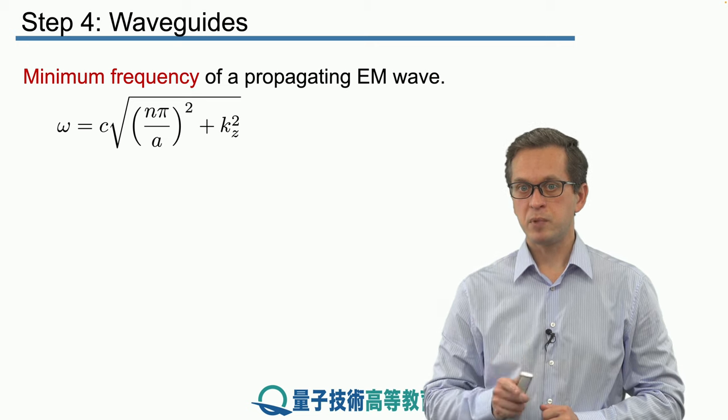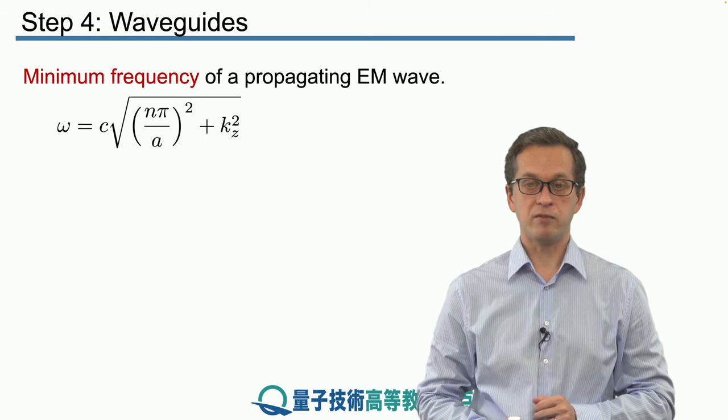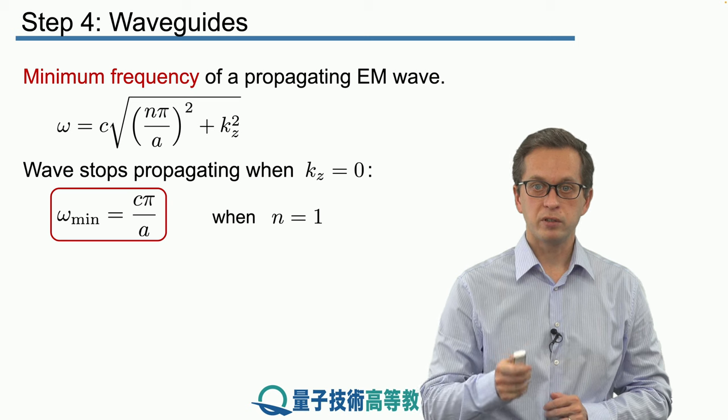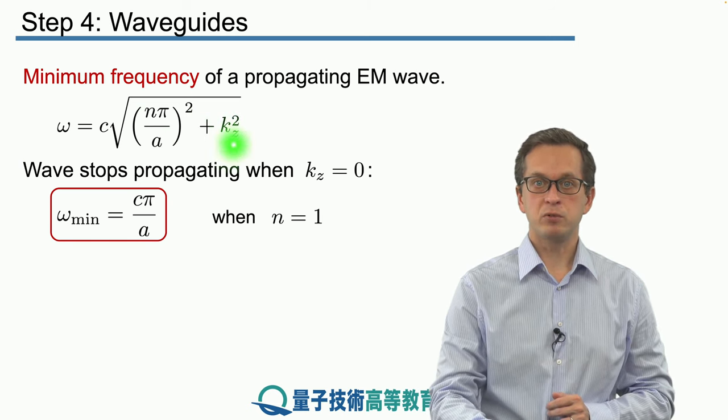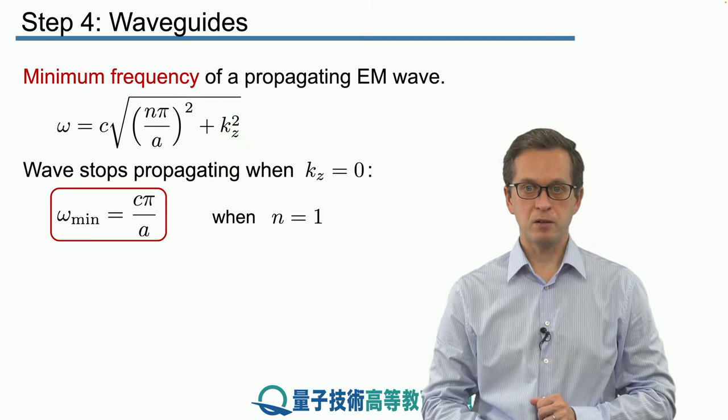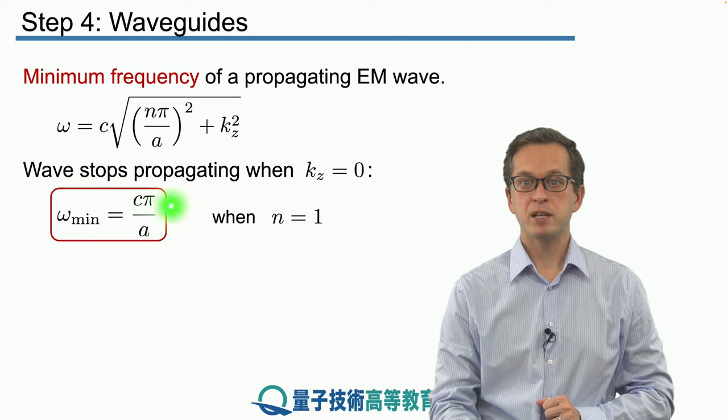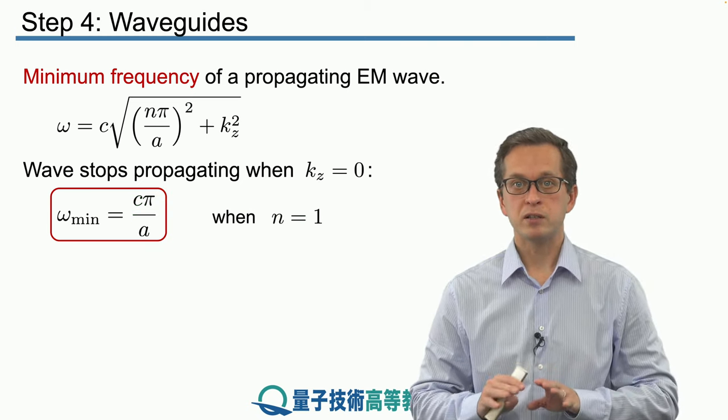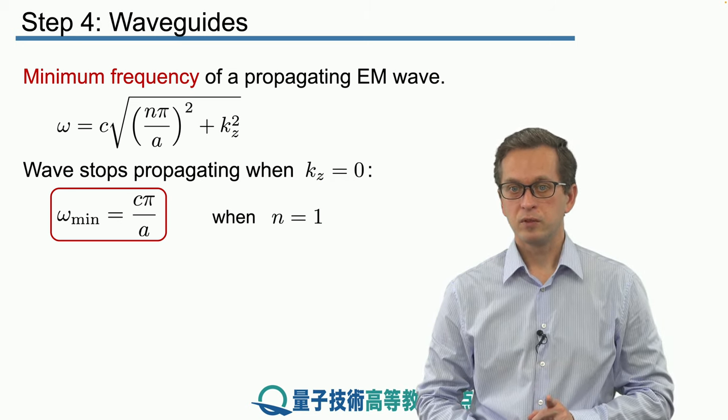That means that there must be some minimum frequency of propagating of the electromagnetic wave through the metallic waveguide. How do we find it? It's very simple. We consider at what point do we obtain finite omega where kz is equal to zero. In other words, the wave stops propagating. That can be very easily solved. When kz is equal to zero, we obtain an expression for omega min. And it's simply c times pi over a, where we set n to be equal to one. Because that will give us the smallest angular frequency.